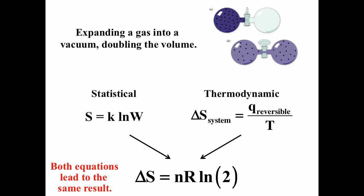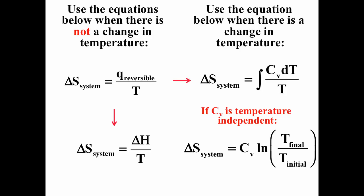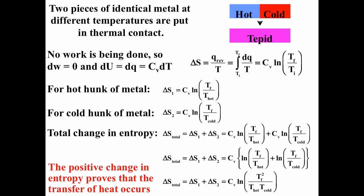ΔS_system = q/T when there is no change in temperature. If there is no temperature change you can write ΔS_system = ΔH/T. If there is a change in temperature, you must integrate: q = C_V dT, so ΔS_system = ∫(C_V dT/T). If C_V is temperature-independent, it comes out of the integral and the integral of dT/T gives ln(T_final / T_initial), so ΔS_system = C_V·ln(T_final / T_initial).